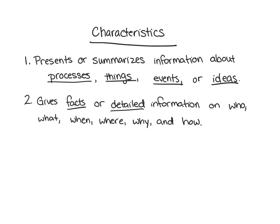The second characteristic is that it gives facts or detailed information on who, what, when, where, why, and how. As you're doing expository writing and trying to figure out what facts or details to include, you can brainstorm using these — the five W's and one H.